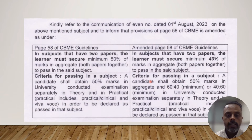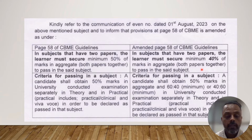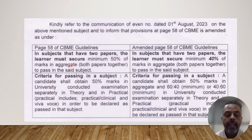This new rule was published in September 2023. As per this new rule, in subjects that have two papers, a learner must secure a minimum of 40% of marks in aggregate — that is both papers together — to pass that particular subject. Previously, students had to secure a minimum of 50% marks in aggregate of both papers together to pass the same subject.